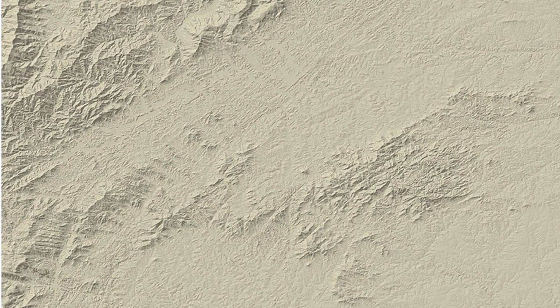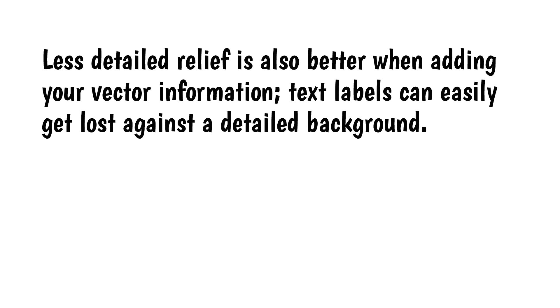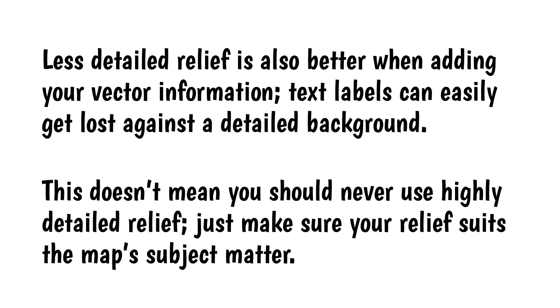Here's what I mean. Here are two files of the same area with some additional enhancement. This is a highly detailed example created with 10 meter data. Here's the same area created with 450 meter data. For most maps, the second one is a better choice — it gives the reader a general impression of the terrain without too much detail. Less detailed relief is also better when adding your vector information such as roads, as text labels can easily get lost against a detailed background. This doesn't mean you should never use highly detailed relief — just make sure your relief suits the map's subject matter.